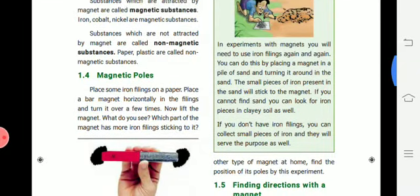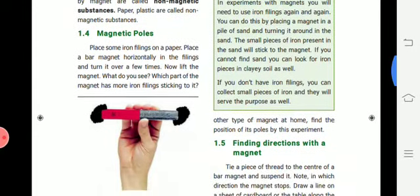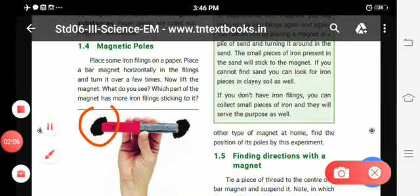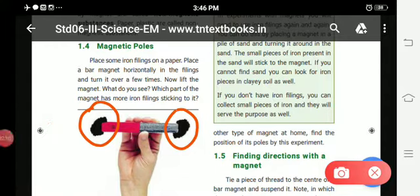And next topic is magnetic poles. Pole, this is the term pole, P-O-L-E. You need to know. Magnetic poles. These two edges you can see, right? That is called poles. They are called poles.